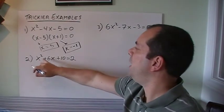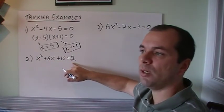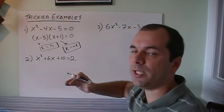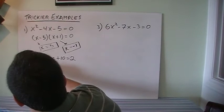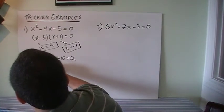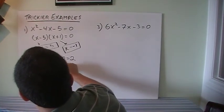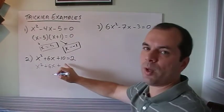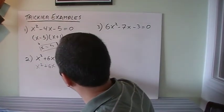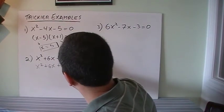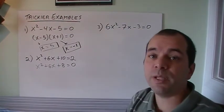So next one, x squared plus 6x plus 10 equals 2. Well, I can't have that equal to 2. It's going to be equal to 0 for this to work, so I need to bring it over. So it's going to be x squared plus 6x plus, I'm going to do this in one step, 10 minus 2 is 8. Now it's equal to 0. Let's see if we can factor this.